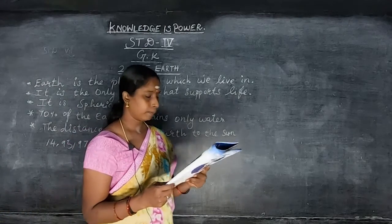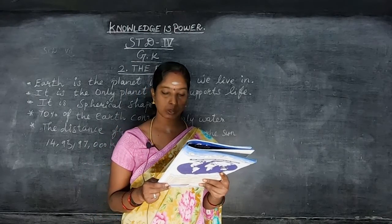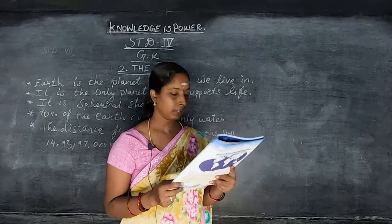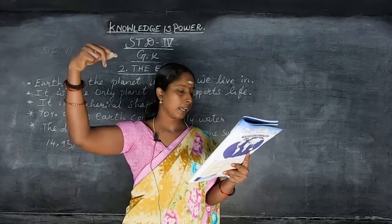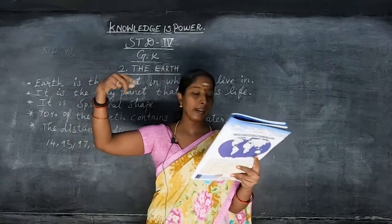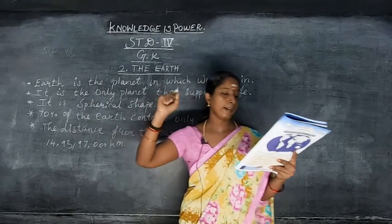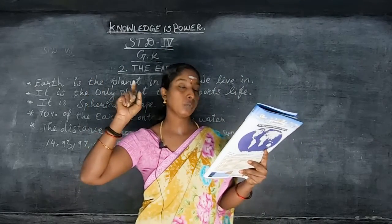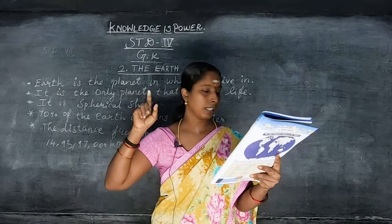Light from the sun takes 8 minutes and 20 seconds to reach the earth. Sunlight takes 8 minutes and 20 seconds to reach the earth.